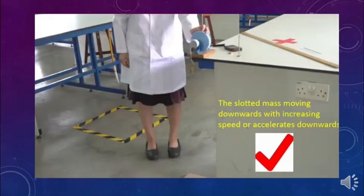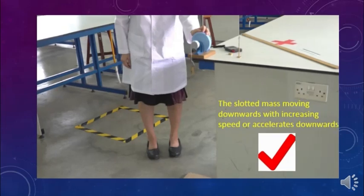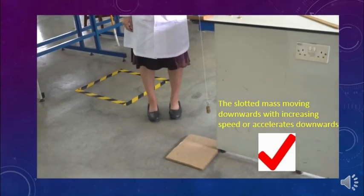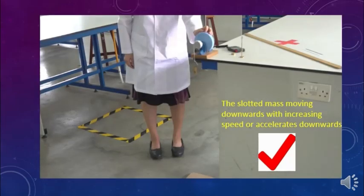The slotted mass is speeding downwards. Start recording the falling slotted mass if it accelerates downwards when released from a certain height. Please watch this video. The slotted mass is speeding downwards.